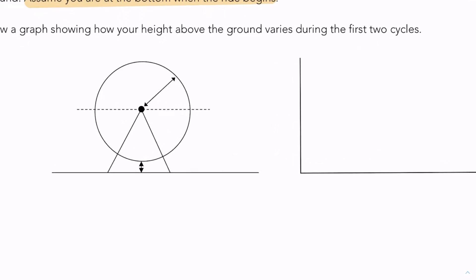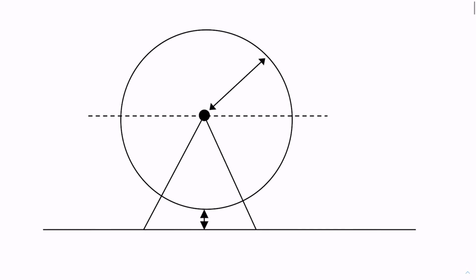Let me zoom in over here. So here's our Ferris wheel. You're going to be starting at this point here. This is your start time, or we can say t equals 0, and the height here is 1 meter above the ground.